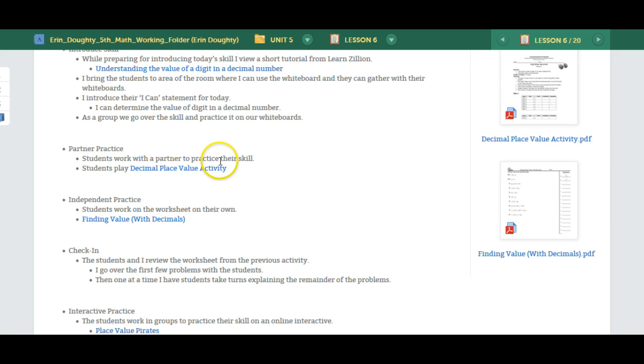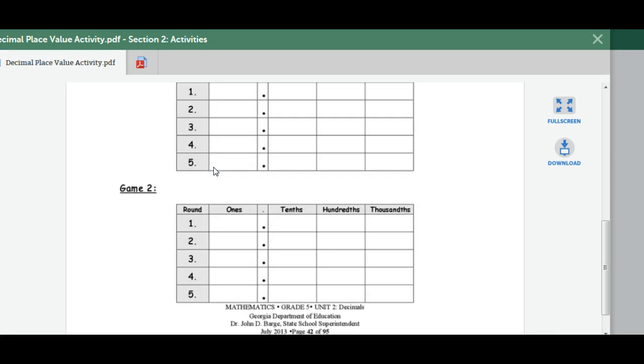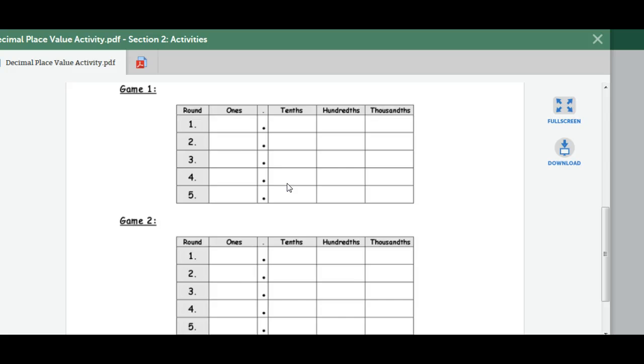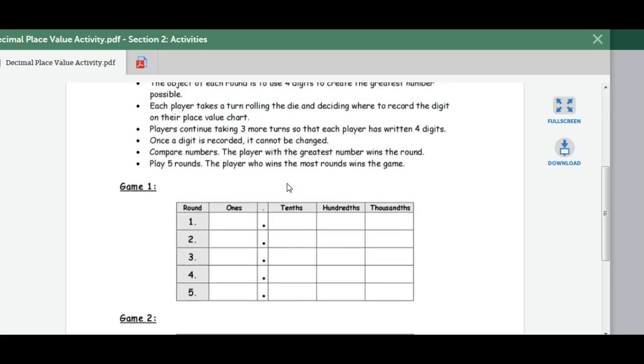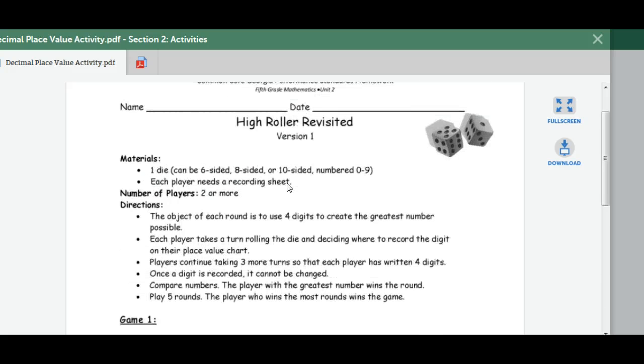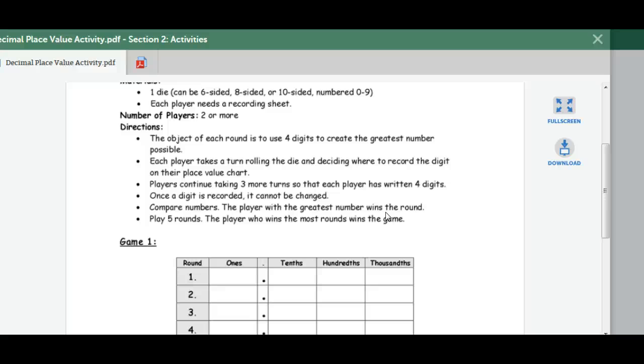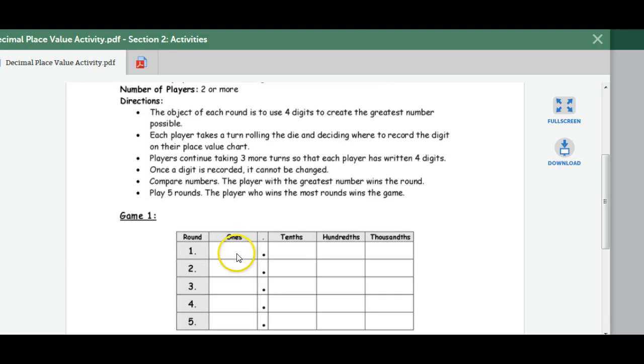The partner practice has students playing a decimal place value game. It's called high roller and the students have to roll the dice and put the numbers in the ones, tenths, hundredths, and thousandths place.